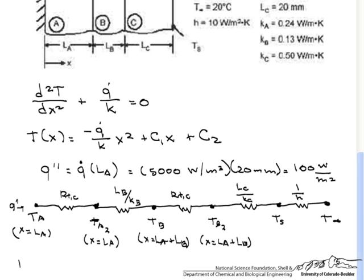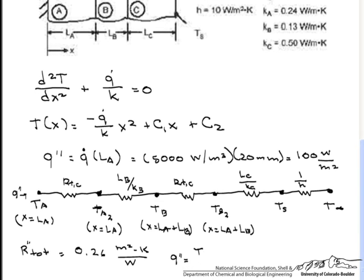First we will find our R total. And that involves adding the RTC, the LB over KB, the next RTC, the LC over KC, and 1 over h. So if you put those all together, you come out with 0.26 meters squared K per watt. So our q double prime is TA minus T infinity over our R total.